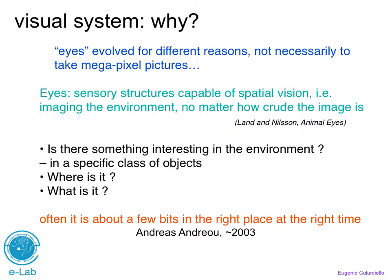We will start first trying to figure out why do we have a visual system. Our eyes — the eyes of humans — have evolved for different reasons, and not necessarily to just look at a nice multi-megapixel picture from your camera phone. The eyes have evolved to study the environment and to figure out important features in the environment.